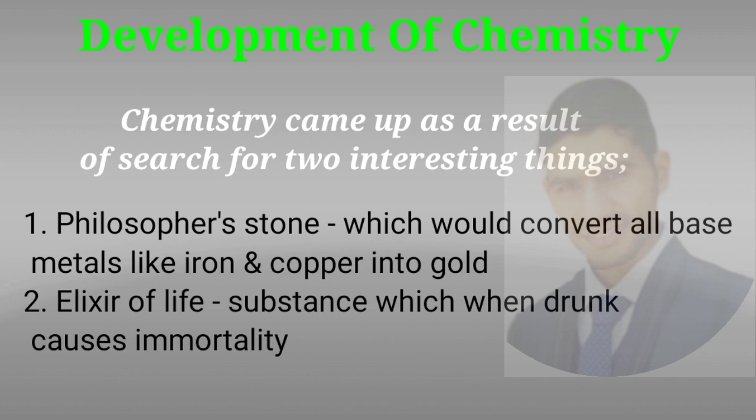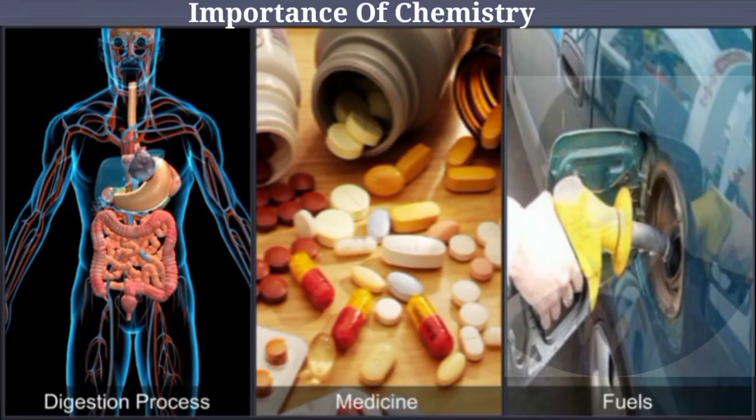Chemistry got developed because of the search for two interesting things: one is the philosopher's stone, which would convert all base metals like iron and copper into gold; and the next is the elixir of life — a substance which, when drunk, causes immortality.